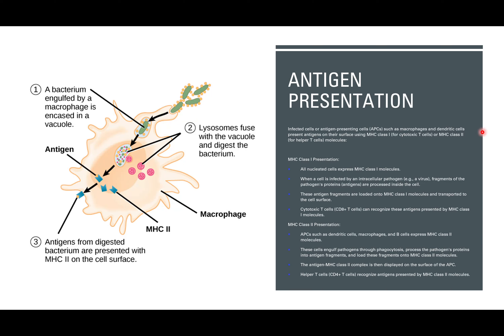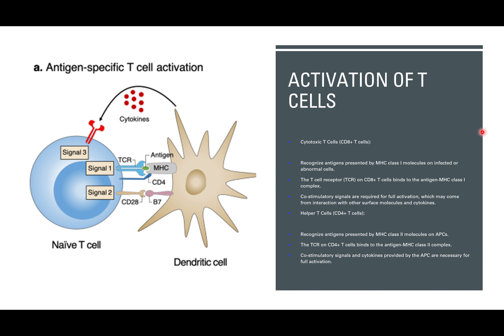We also have MHC class 2 complexes. These MHC class 2 complexes are usually presented by antigen presenting cells such as dendritic cells, macrophages, and B cells. So the pathogens present the MHC class 1, and the antigen presenting cells present the MHC class 2.